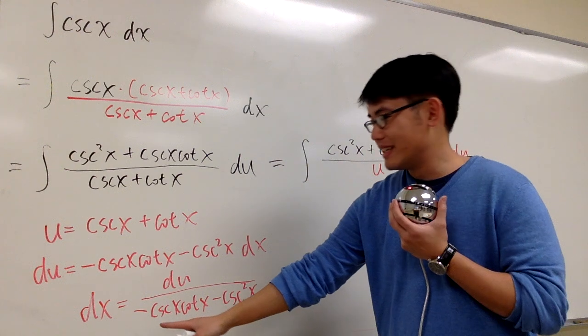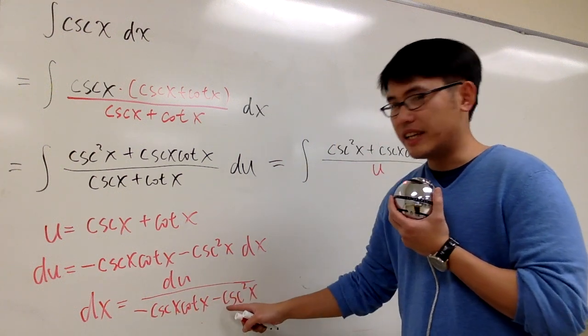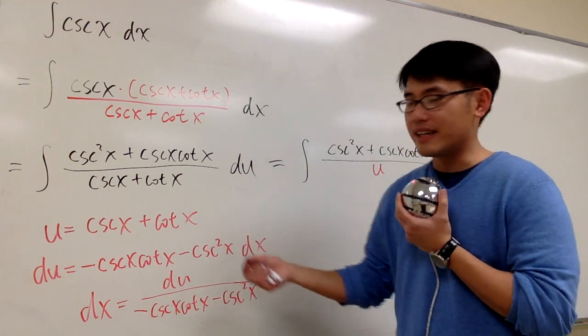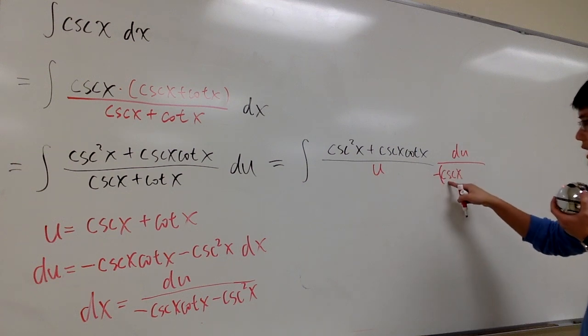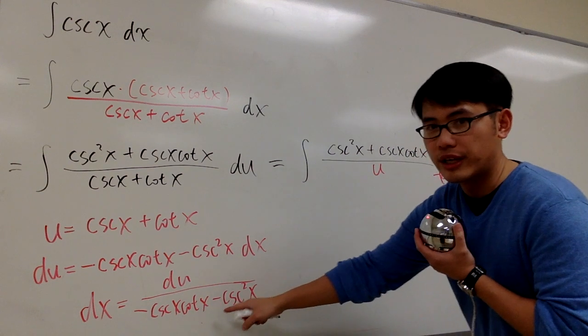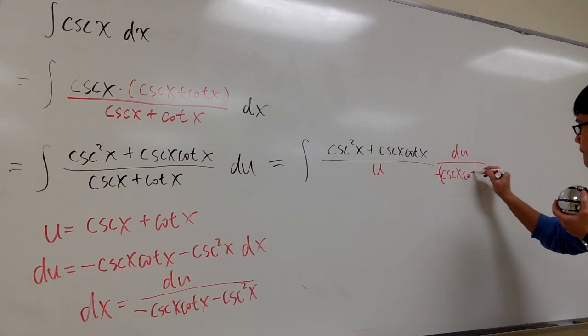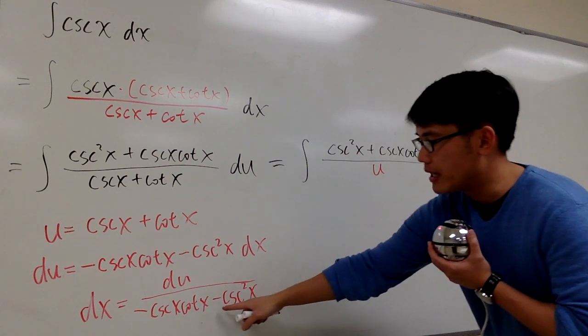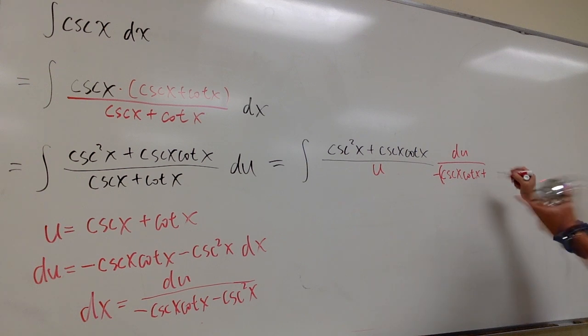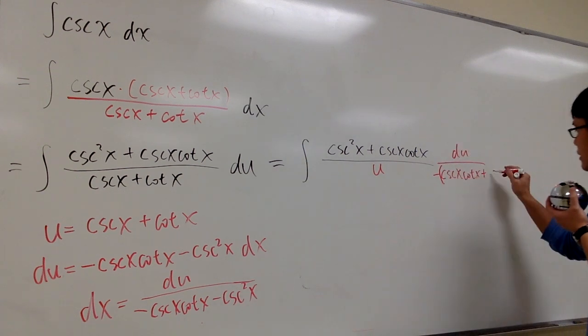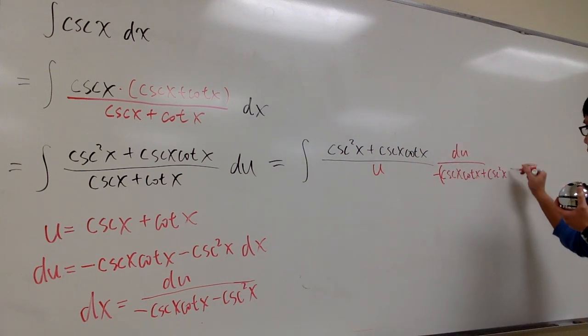Let's take a look at this. This is a negative, that's a negative. Can I factor out a negative? Yes, I can. Let's factor out a negative. So, we have negative cosecant x cotangent x. But then this will become plus after I factor out this negative. And we have the cosecant squared right here. Cosecant squared x.